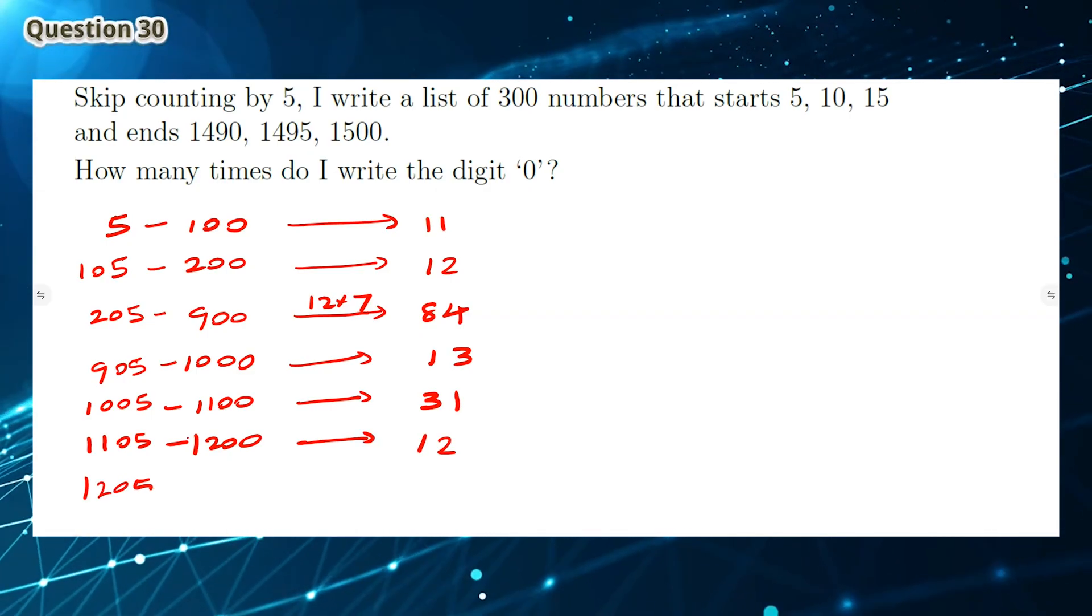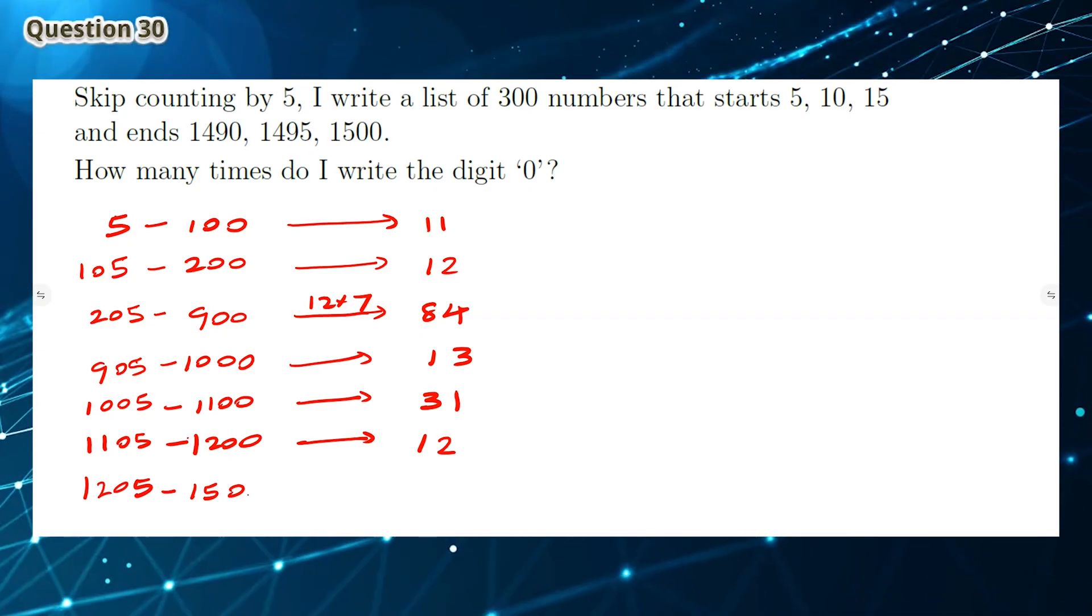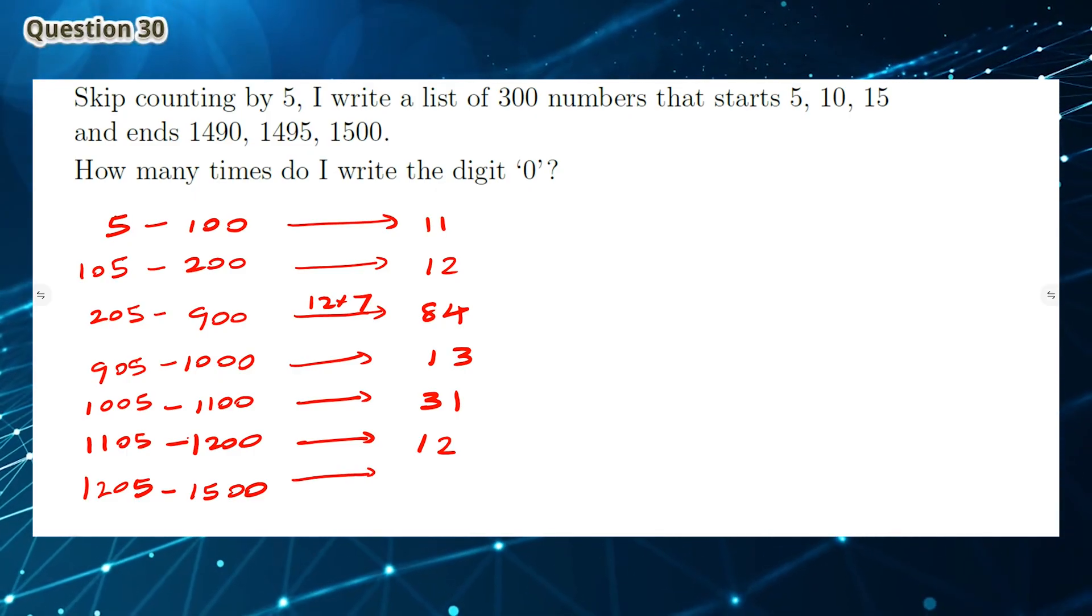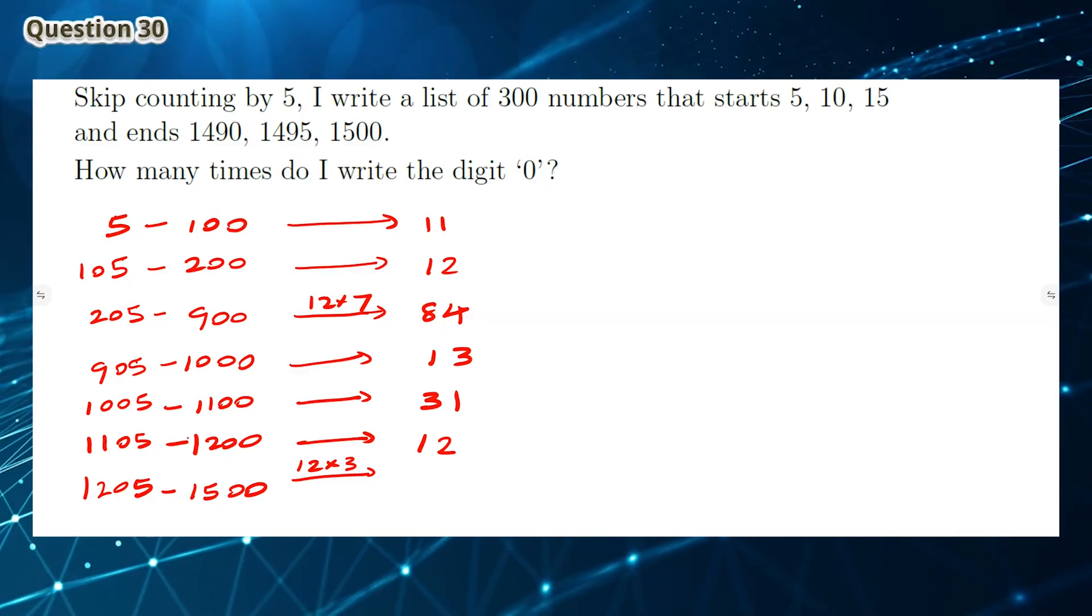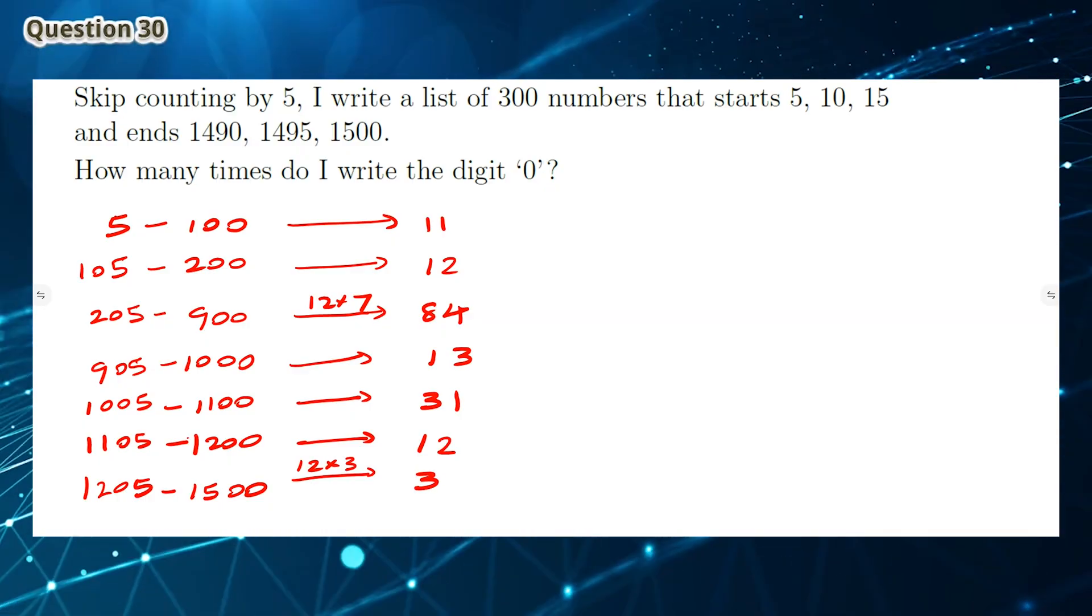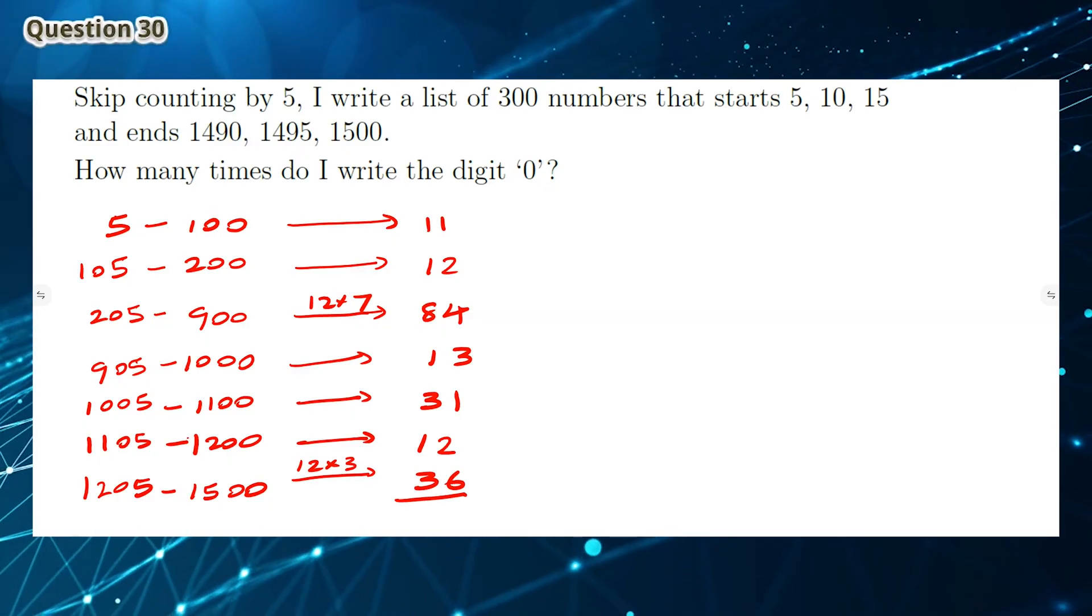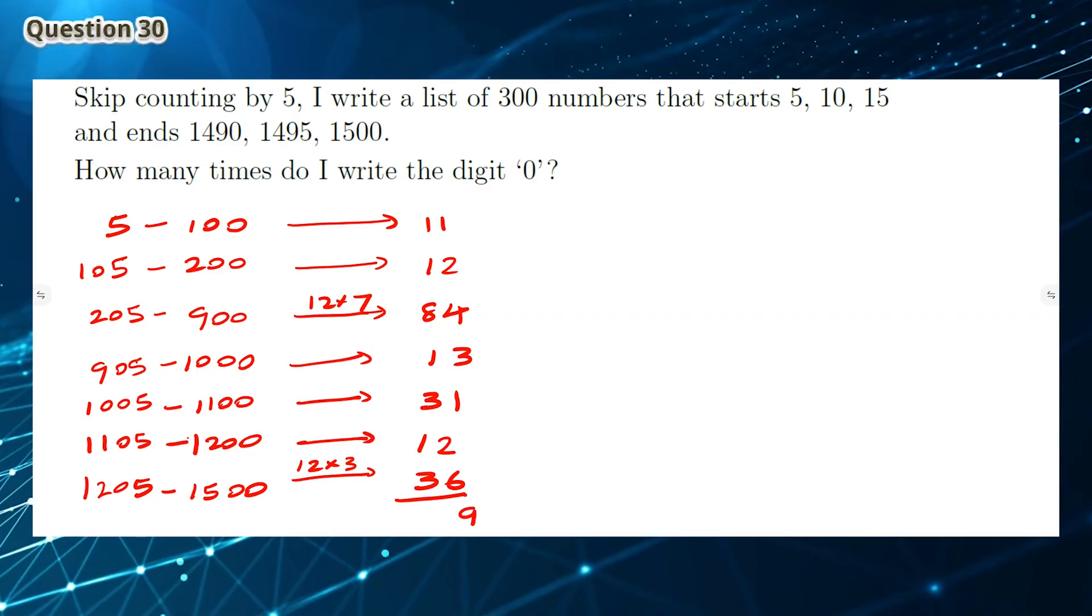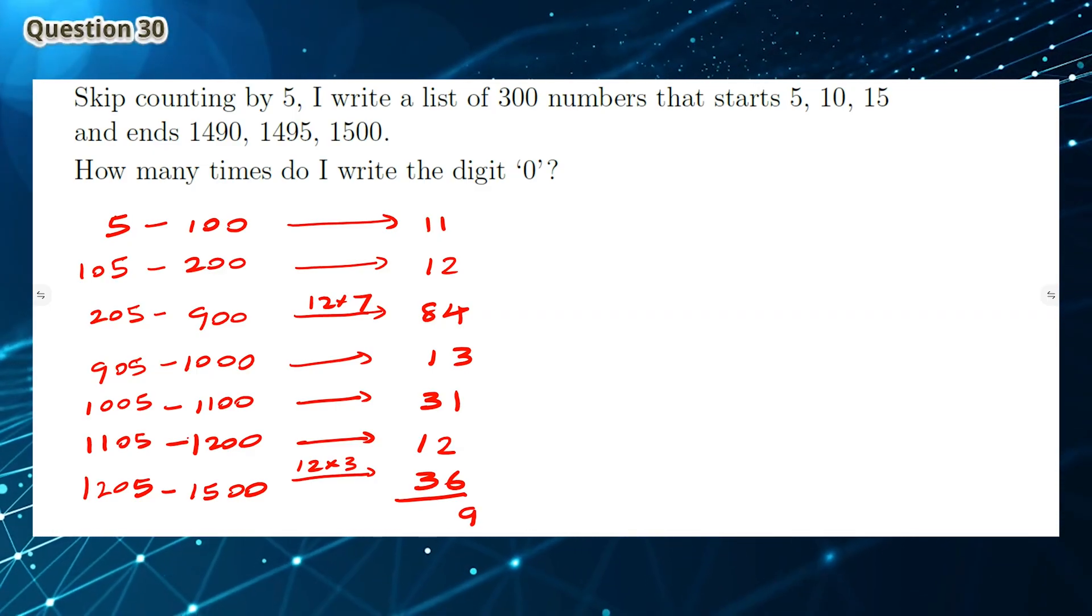You write the digit 0 from 1105 to 1200 twelve times. And between 1205 to 1500, you basically do the same thing for 1105 to 1200, but instead you do this 3 times. So you write the digit 0 thirty-six times. So all together, you write the digit 0 a total of 199 times.